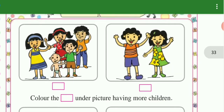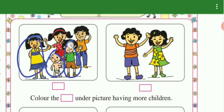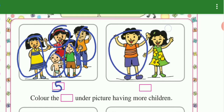See here, how many boys and girls are there? Count. 1, 2, 3, 4 and 5 right here. The number 5. And here 1 and 2.